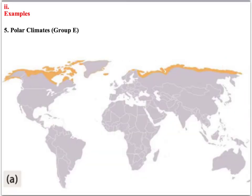Polar climates are found across the continents that border the Arctic Ocean, Greenland, and Antarctica. Winters are entirely dark and bitterly cold. Summer days are long, but the sun is low, so summers aren't that warm. Remember our lab on why we have seasons? It's the angle of the sunlight. The angle of the sun is not very high even in the summer here. This area is dry and not getting a lot of precipitation.